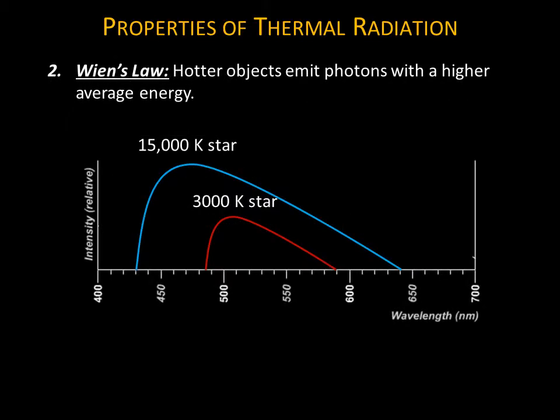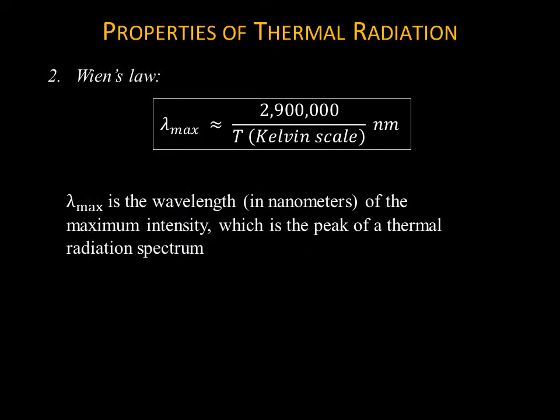The second radiation law is Wien's law, which says hotter objects emit photons with a higher average energy. Higher energy means a shorter wavelength. This is why the peak of the spectrum for a hot blue star is at a shorter wavelength than for a cool red star. Wien's law is expressed mathematically as lambda max — the wavelength in nanometers of the maximum intensity, which is the peak of the thermal radiation spectrum. The temperature is on the Kelvin scale. Note that the larger the temperature, the smaller or shorter the lambda max is, as expected.